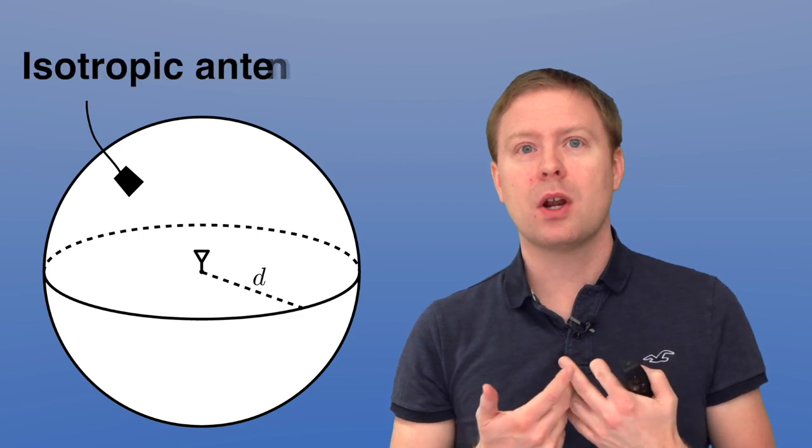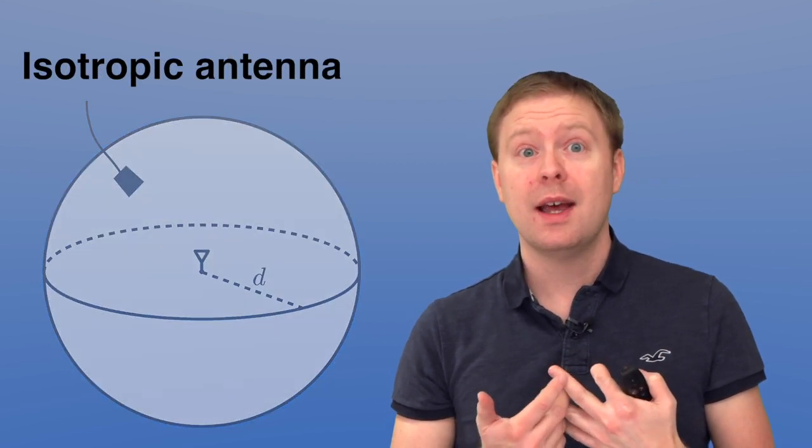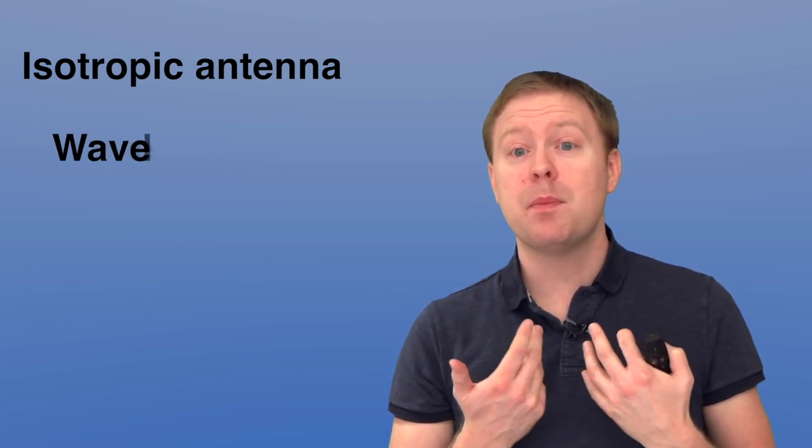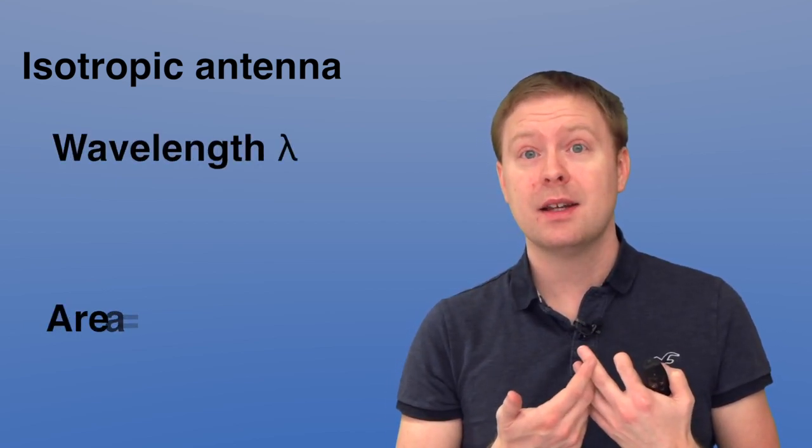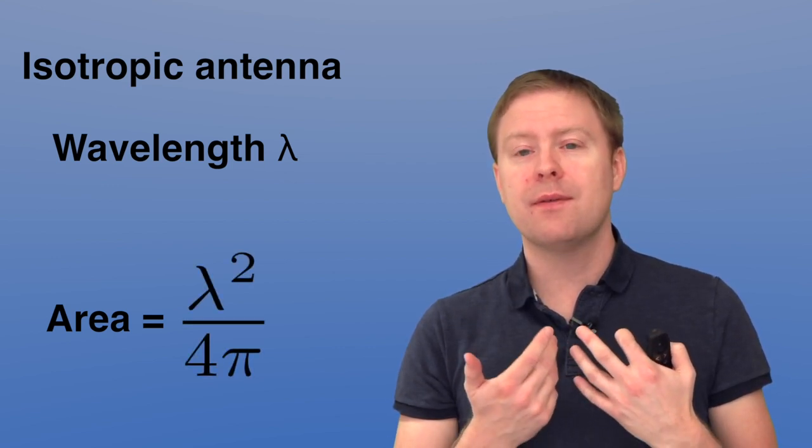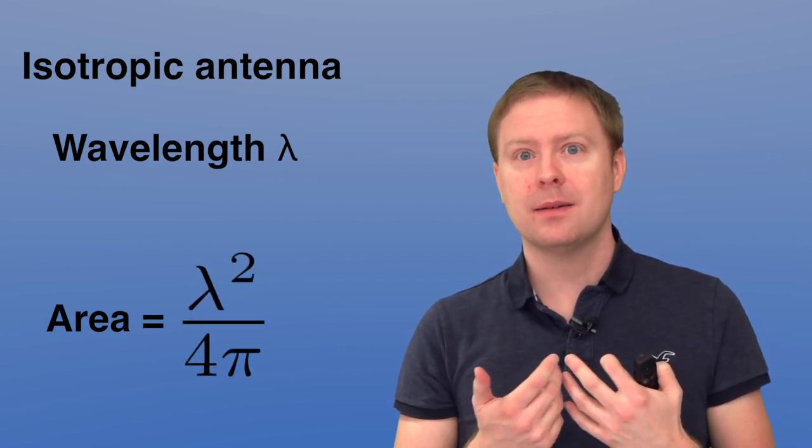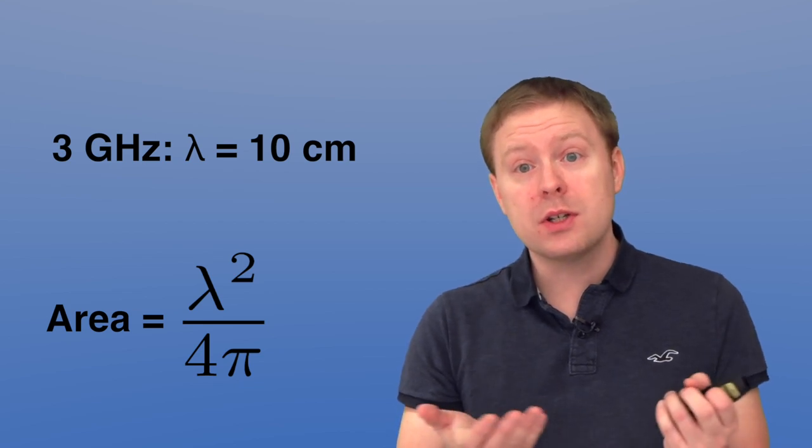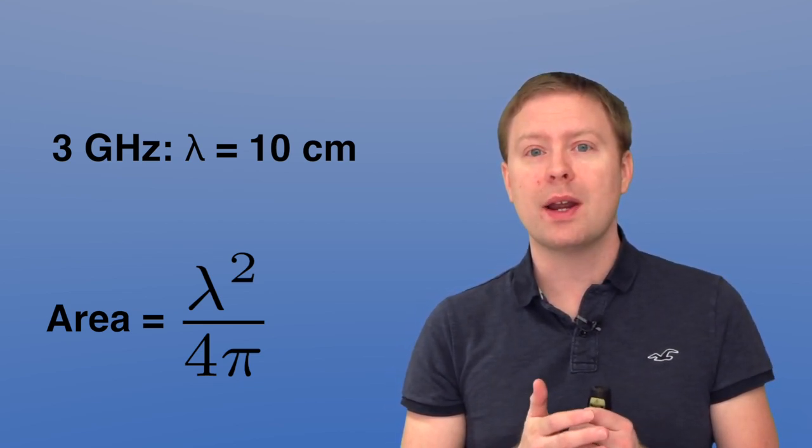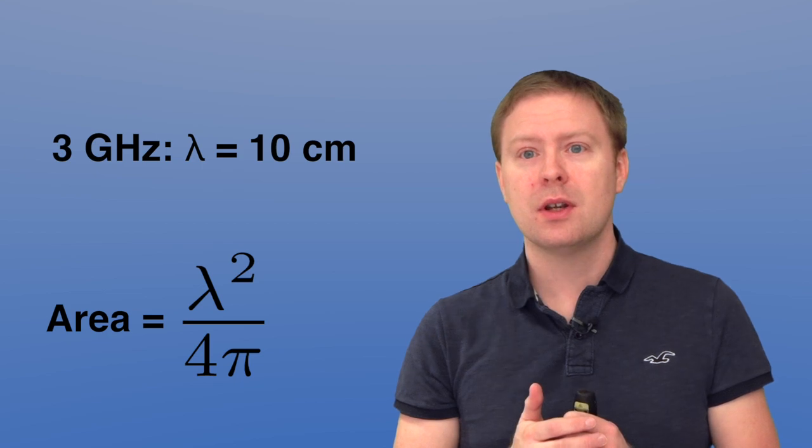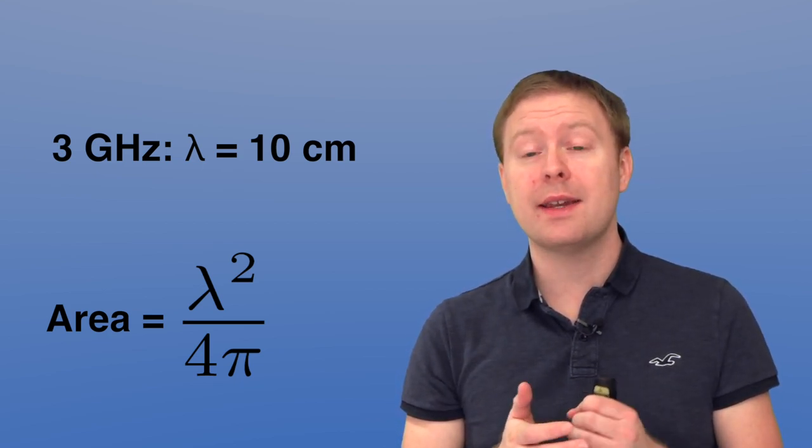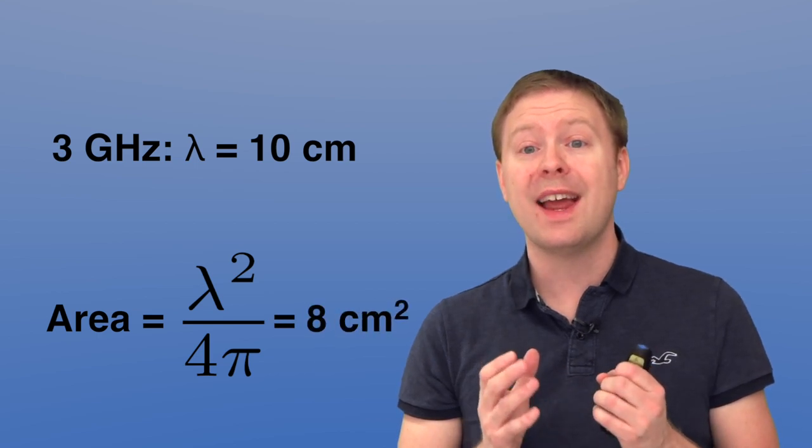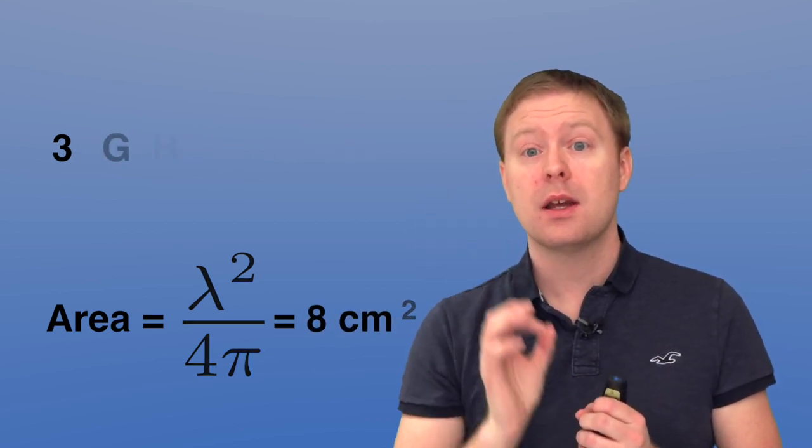Typically we are considering isotropic antennas also for reception, and the size of an isotropic antenna depends on which wavelength we are communicating at. It's the wavelength to the power of 2 divided by 4 pi. For example, if you have a 3 gigahertz carrier frequency, which is quite typical for wireless communications, then the wavelength is 10 centimeters or 0.1 meters, and that means that the area of an isotropic antenna is around 8 square centimeters. So it's a small thing and that should be compared to a very large balloon where the transmit power lies.